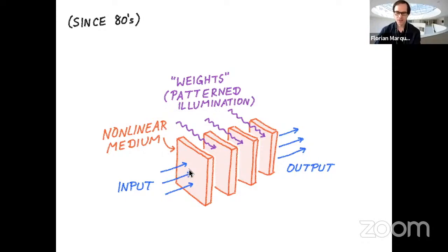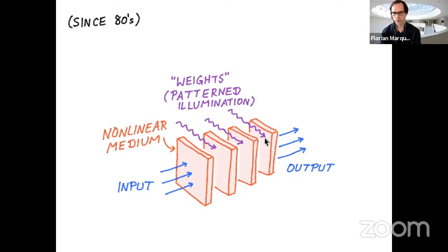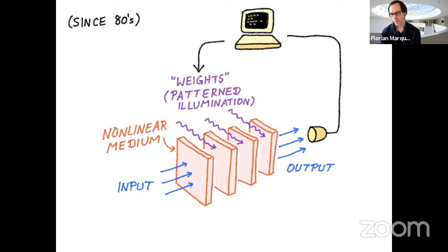You would have a device where you have some input wave, then a couple of nonlinear media and maybe some linear propagation in between, and then you get some output. The question is still how to change the parameters of your device. For example, exploiting the nonlinearity, you could come in with some extra illumination from the side, which is patterned and can be structured. Depending on the structure of this extra illumination, you will distort the wavefront of the forward-propagating wave. The simplest version would be to look at the output and detect how much it deviates from the desired output, then use an electronic computer to update the weights.